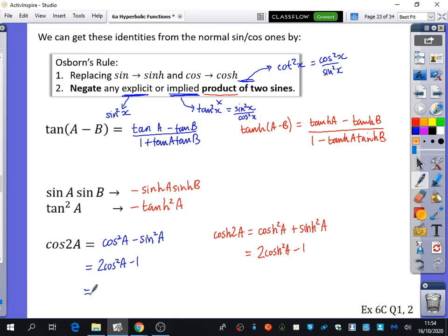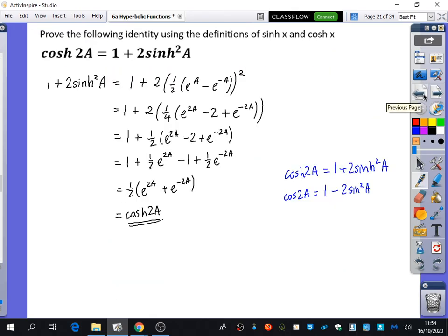And then as an example, the third one is 1 minus 2 sine squared A. So when this becomes hyperbolic, it will be 1 plus 2 sinh squared A. Make sure I put my H in there. And I think we actually proved that identity back here. We proved that it was 1 plus 2 sinh squared A.